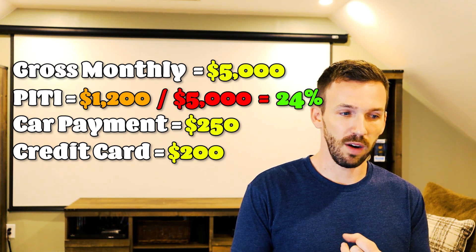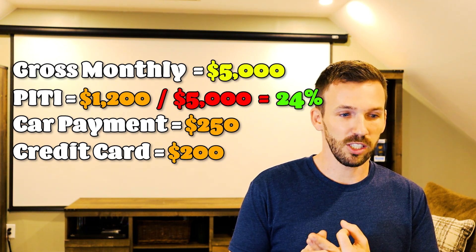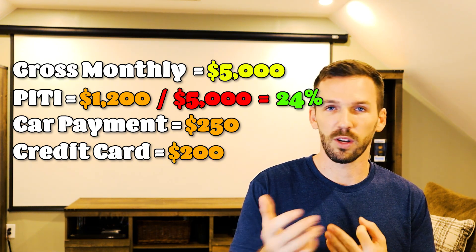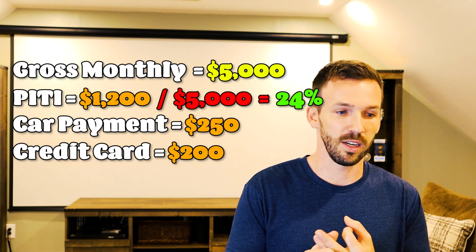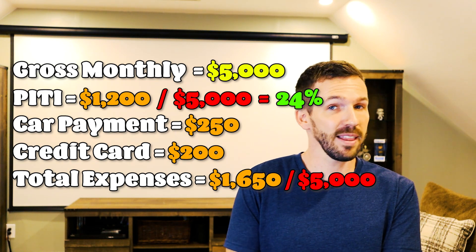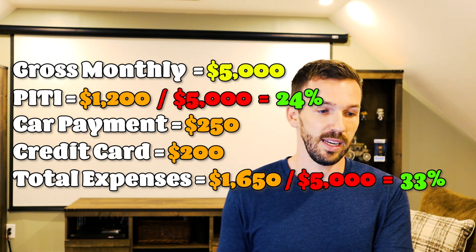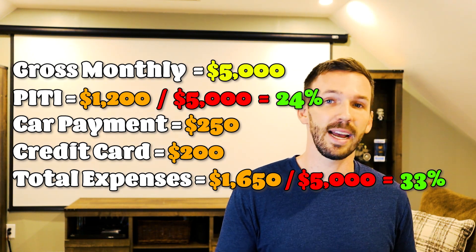Then add all recurring expenses: $1,200 for the house payment, $250 for the car, and $200 for the credit card — totaling $1,650. Divide that by $5,000 income and you get 33%, which is still under the 36% debt ratio — so they're good. On the test, they will provide different ratios if they want them to change. If they don't provide them, you'll need to remember the 28% and 36% ratios.